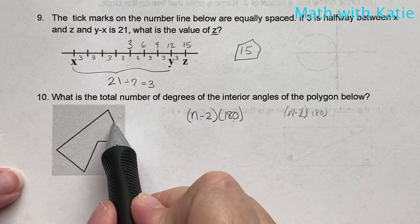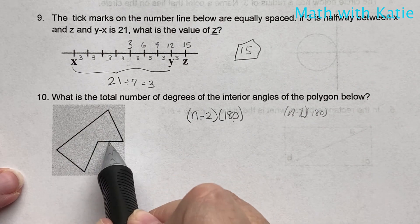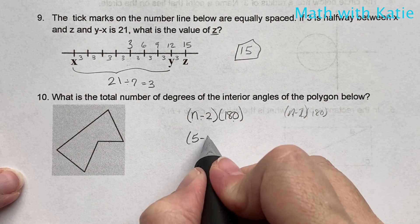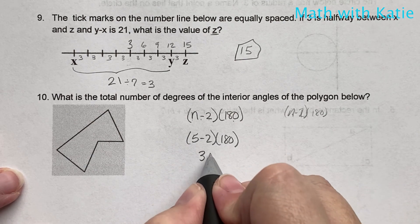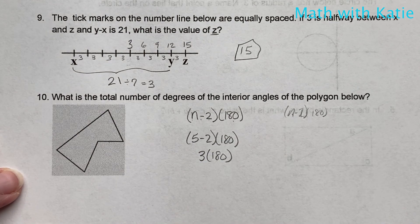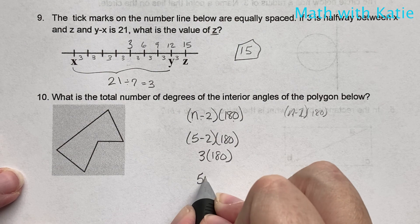How many sides do we have? One, two, three, four, five. So five minus two times 180. So three times 180. So 540.